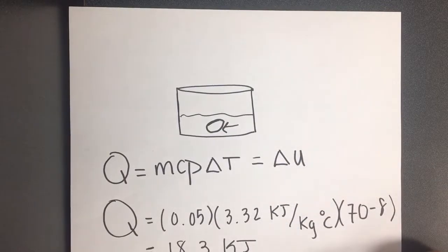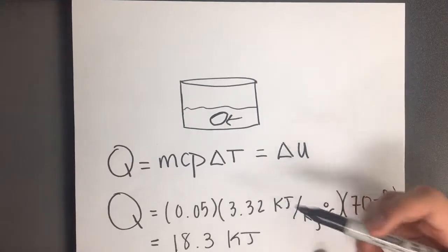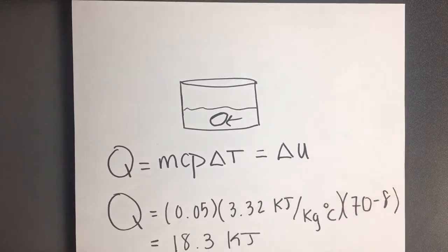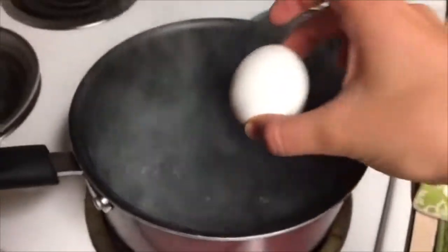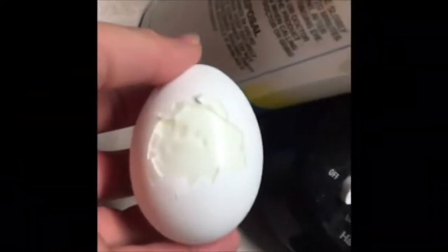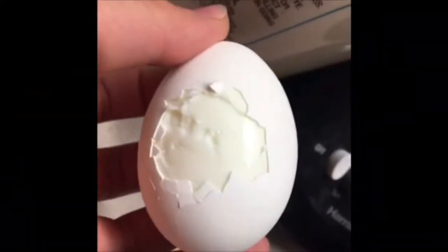Unlike dropping the egg, cooking the egg requires a lot more energy as denoted by the 18.3 kilojoules. As energy is transferred from the water to the egg in the form of heat, the internal energy of the egg changes, and we can see this physical change as the egg changes from a liquid to a solid.